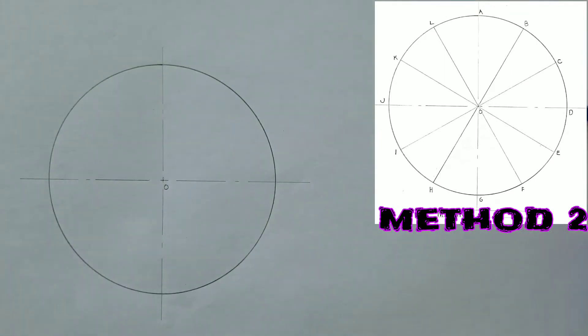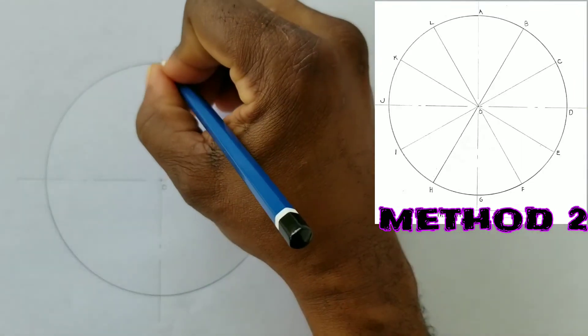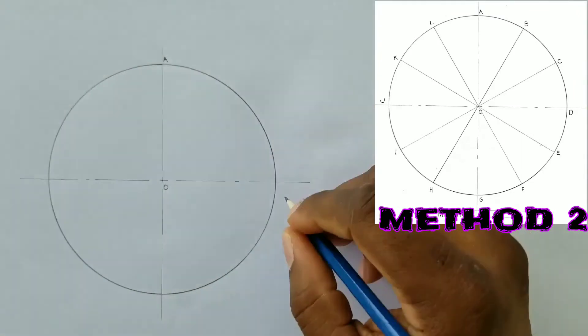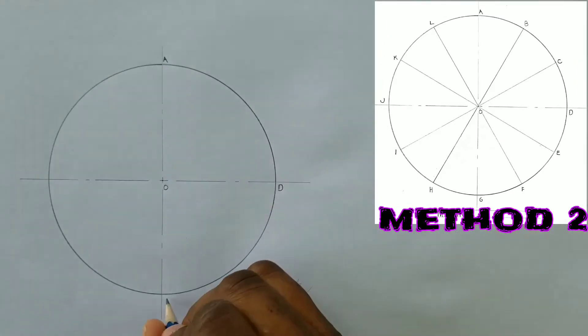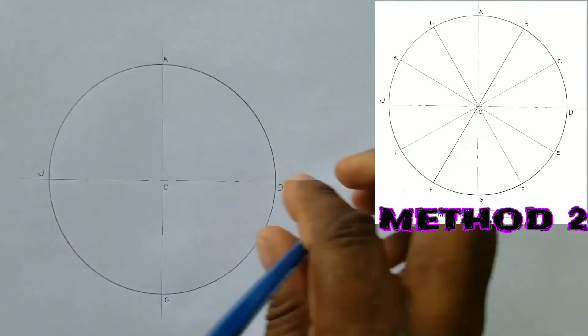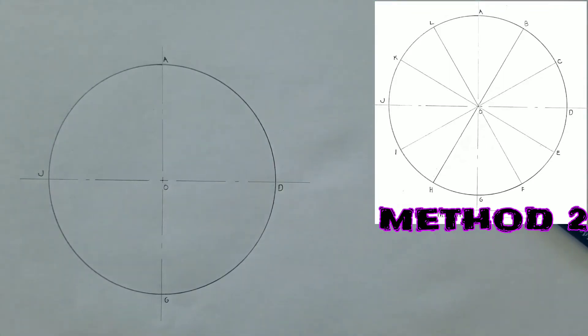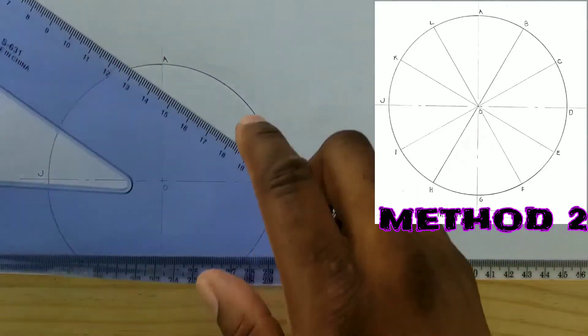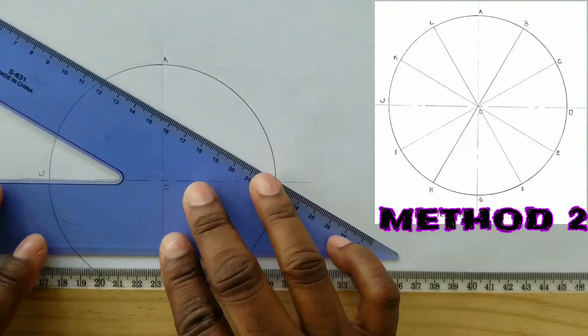We will now label points A, D, G, and J. We will now use our T-square along with our 60-30 square to divide this circle into 12 equal parts.